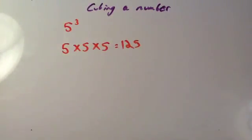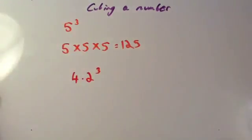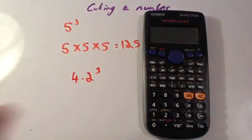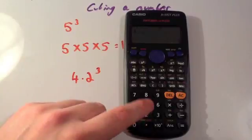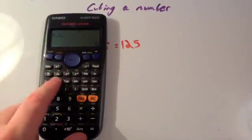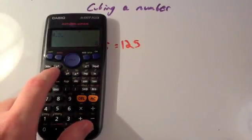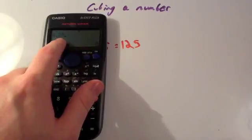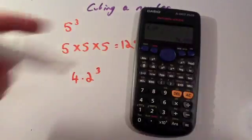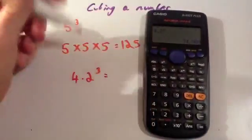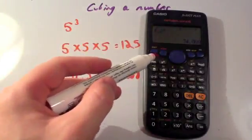On a calculator, just say for instance I wanted to work out 4.2 cubed. What I would do is on my calculator — I'm just going to show you where the cube button is. I would type 4.2 and the cube button. The cube button is this one up here — see the x with the little 3? So you press that and you'll see you've got the cube symbol there. So 4.2 cubed equals 74.088. So that's the cube button on the calculator.